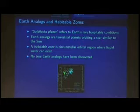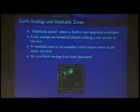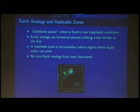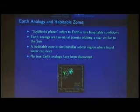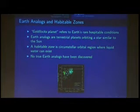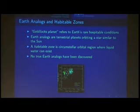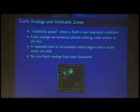Earth is really rare in the sense that we call it a Goldilocks planet — it's not too hot and it's not too cold. There is a really specific set of conditions that a planet must follow in order to be hospitable for life. This is defined by a habitable zone, which is a circumstellar area around a star where liquid water can exist and therefore life can exist also. No true Earth analogs have really been discovered.